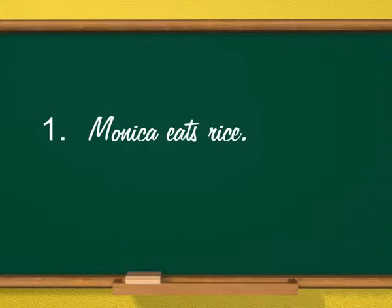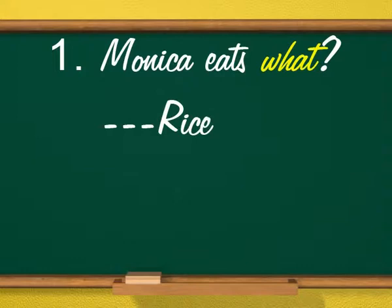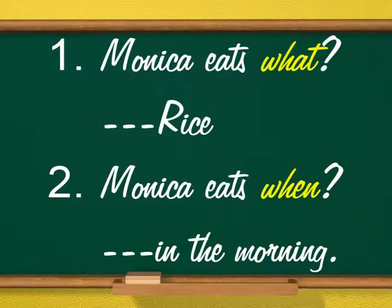Let us look at the following sentences. First: 'Monica eats rice.' Second: 'Monica eats in the morning.' What is the difference? Monica eats what? Rice. Monica eats when? In the morning. As rice answers the question what, it is the object of the verb eats. In the second sentence, the question is when, and the answer 'in the morning' is an adverbial phrase, so it is not an object.